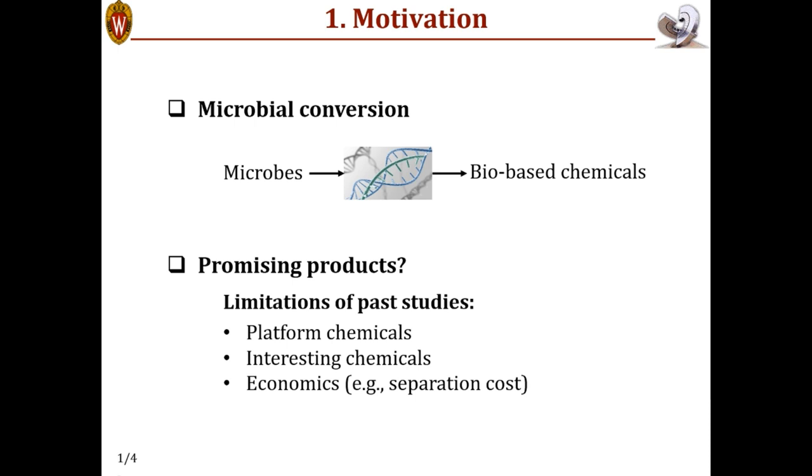The way we do it on a very high level is we start from database chemicals, and then we find out which ones can be produced through microbial conversion. And finally, we develop a few screening criteria to identify the promising chemicals.